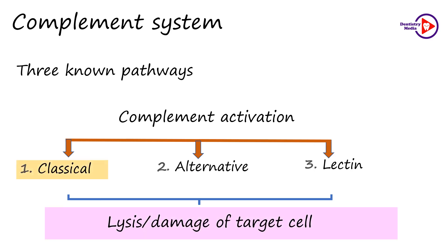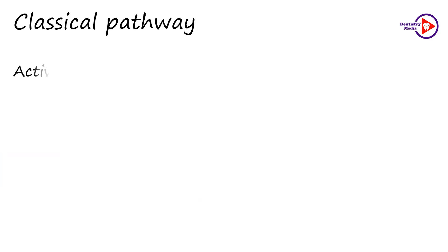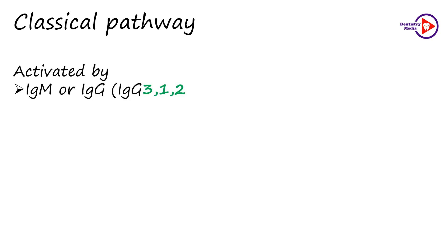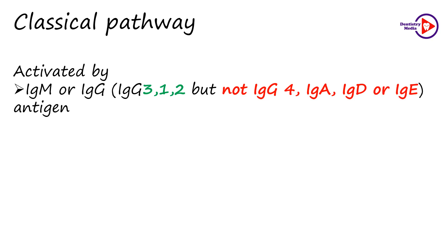We will first see the classical pathway in detail. The classical pathway is majorly activated by the antigen-antibody immune complexes. The class of antibodies that fix complement are IgM or IgG, specifically IgG3, IgG1 and IgG2, but not IgG4, IgA, IgD or IgE. Therefore, the fixation of complement is not influenced by the nature of antigens, but only by the class of immunoglobulins.